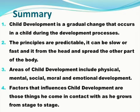Summary: 1. Child development is a gradual change that occurs in a child during the development process. 2. The principles are predictable — it can be slow or fast, and starts from the head and spreads to other parts of the body. 3. Areas of child development include physical, mental, social, moral, and emotional development. 4. Factors that influence child development are those things the child comes in contact with as he grows from stage to stage.